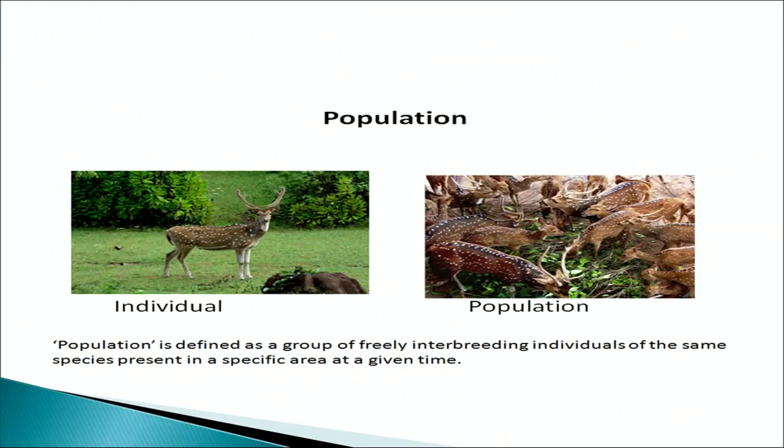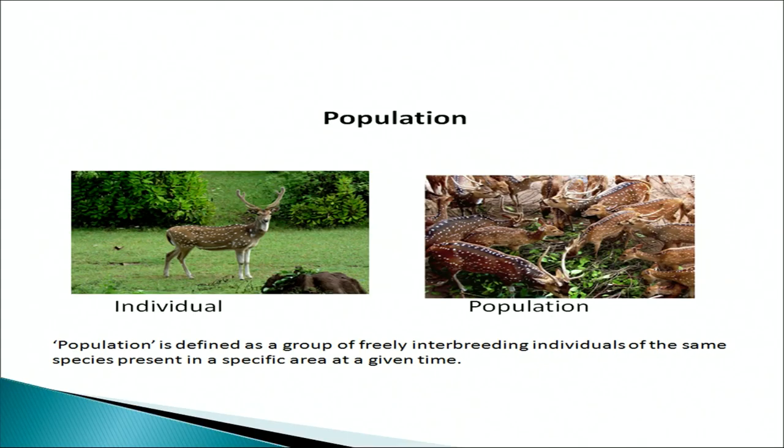This slide shows population. On the left side you can see an individual — one organism — and on the right, the same organism in a population of many. Population is defined as a group of freely interbreeding individuals of the same species present in a specific area at a given time. For example, when we say the population of a city is 50,000, we mean there are 50,000 humans in that city.